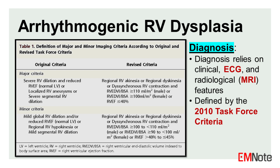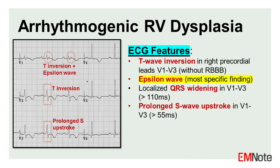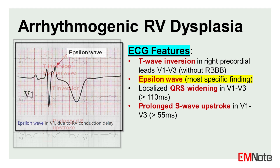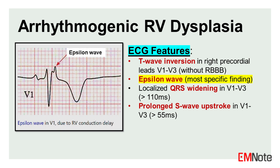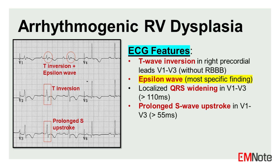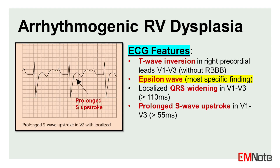The diagnosis of ARVD is challenging and relies on a combination of clinical, electrocardiographic, and radiological features, as defined by the 2010 Task Force criteria. Key ECG findings include T-wave inversion in the right precordial leads V1 to V3, the presence of an epsilon wave, localized QRS widening in V1 to V3, and a prolonged S-wave upstroke.